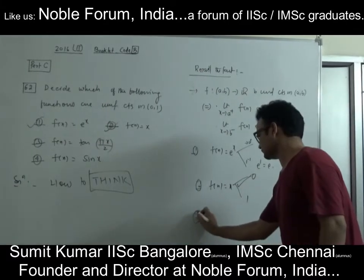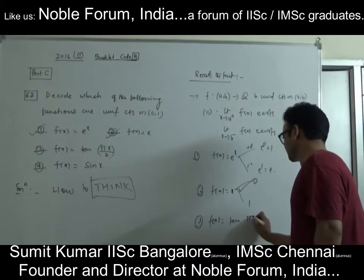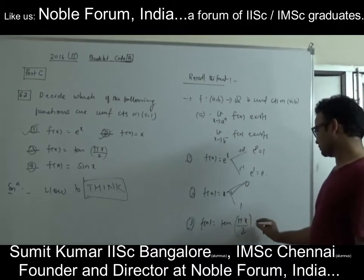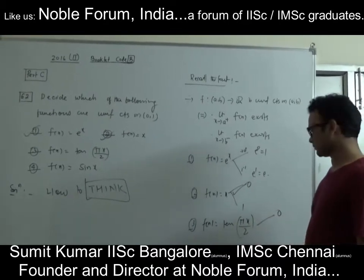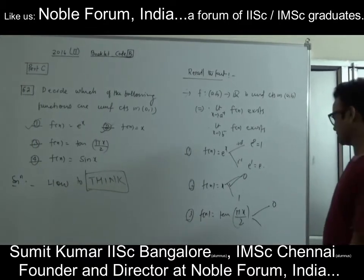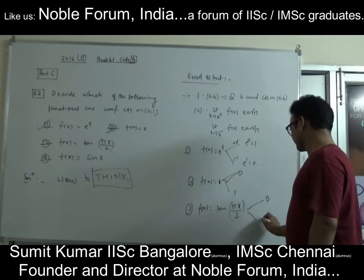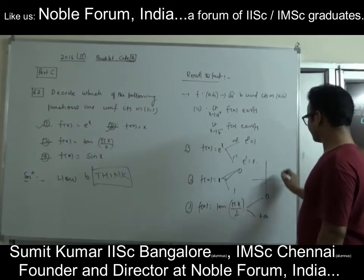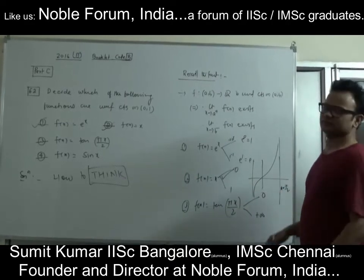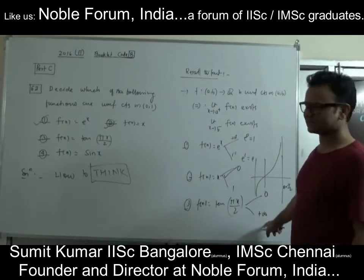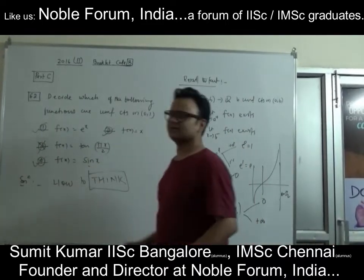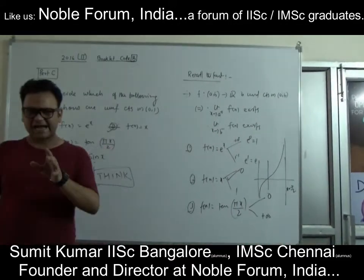Third option: f(x) = tan(πx/2). As x→0, tan(0) = 0, no problem. But as x→1 from the left, you are approaching tan(π/2), which is +∞. So the limit does not exist — this is not uniformly continuous. If you recall the graph of tan(x), x = π/2 is an asymptote. Fourth option, sin(x): a continuous periodic function is always uniformly continuous. So that is uniformly continuous.